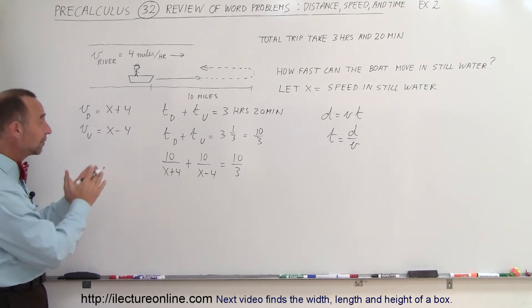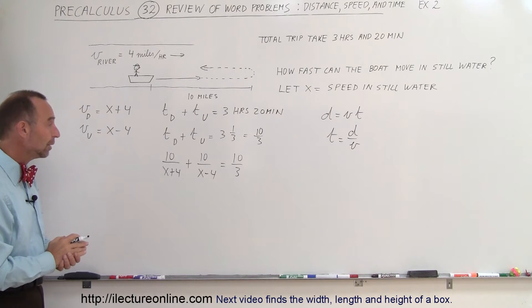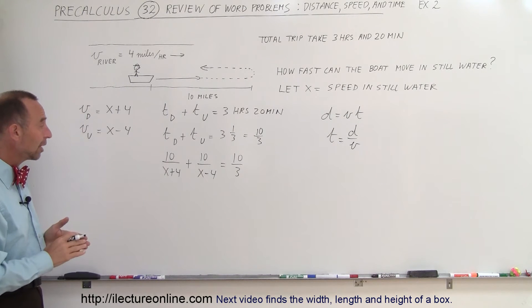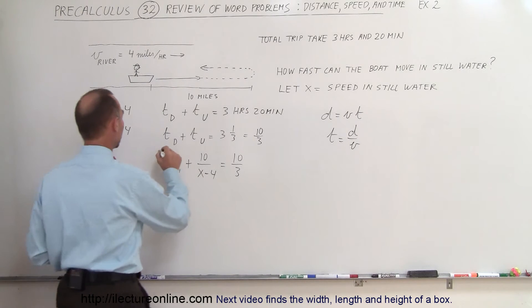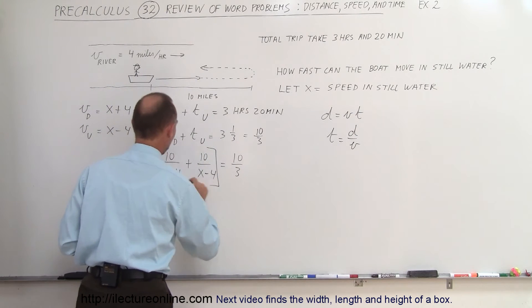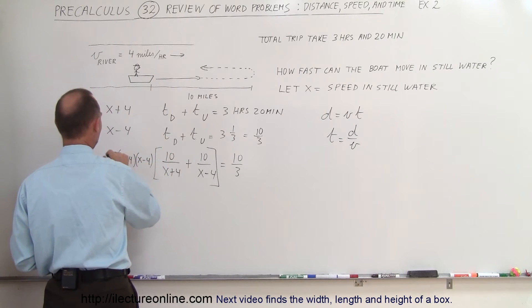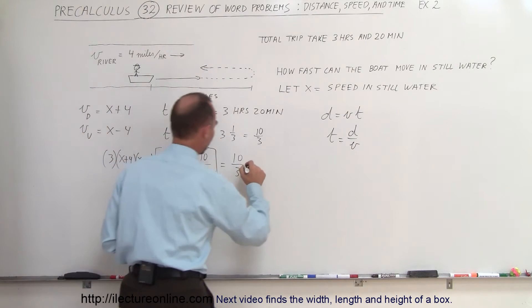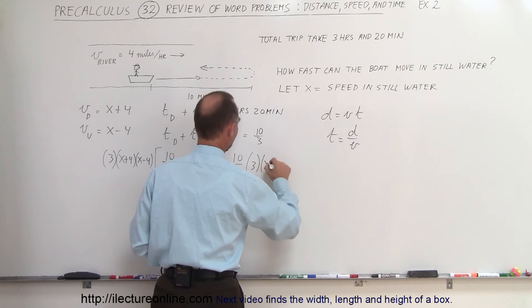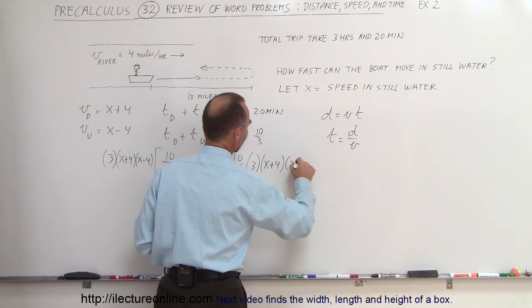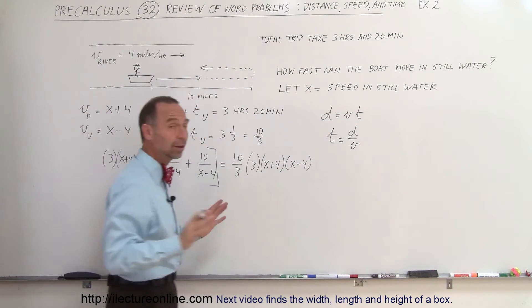Okay, now we're ready to solve this. We're going to multiply both sides of the equation by the lowest common denominator, which means we're going to multiply both sides by x plus 4 times x minus 4 times 3, and do the same on the right side. That way we get rid of the fractions.